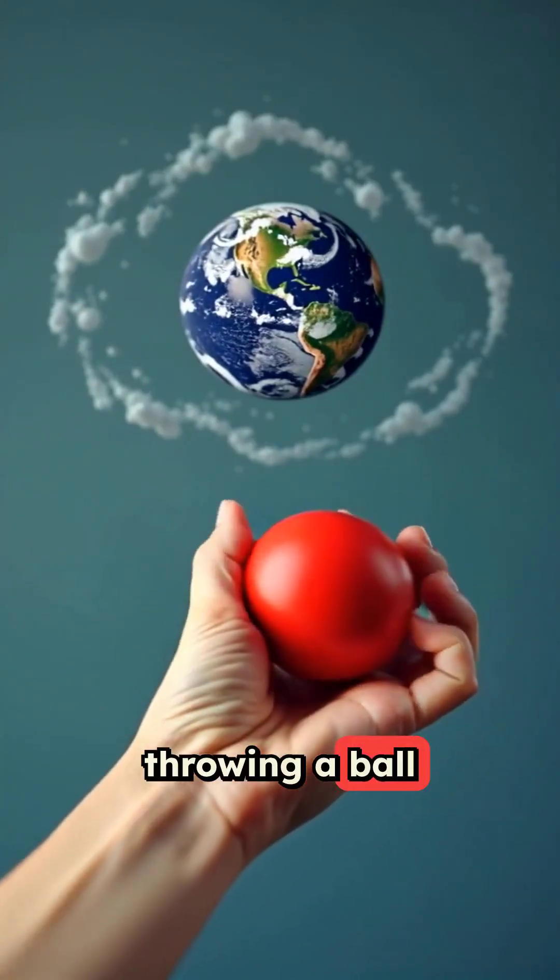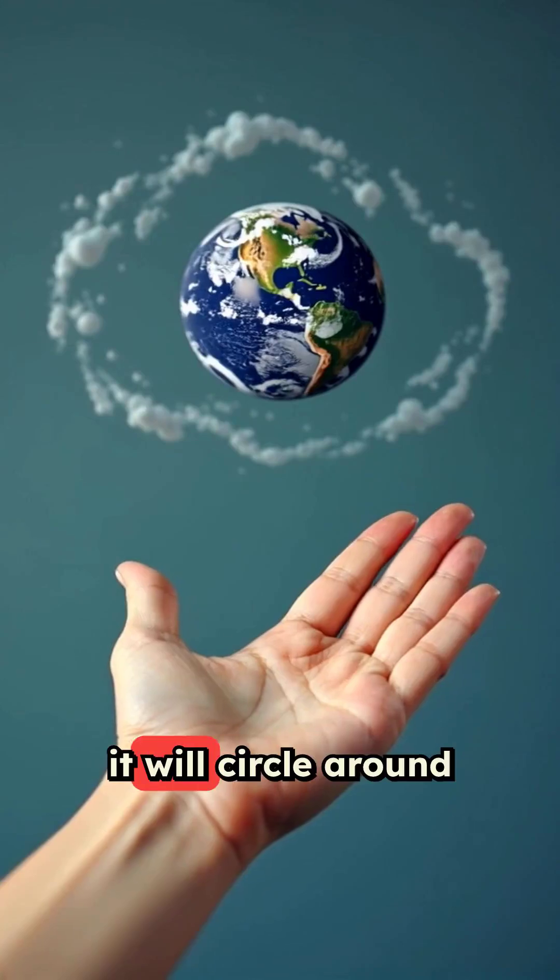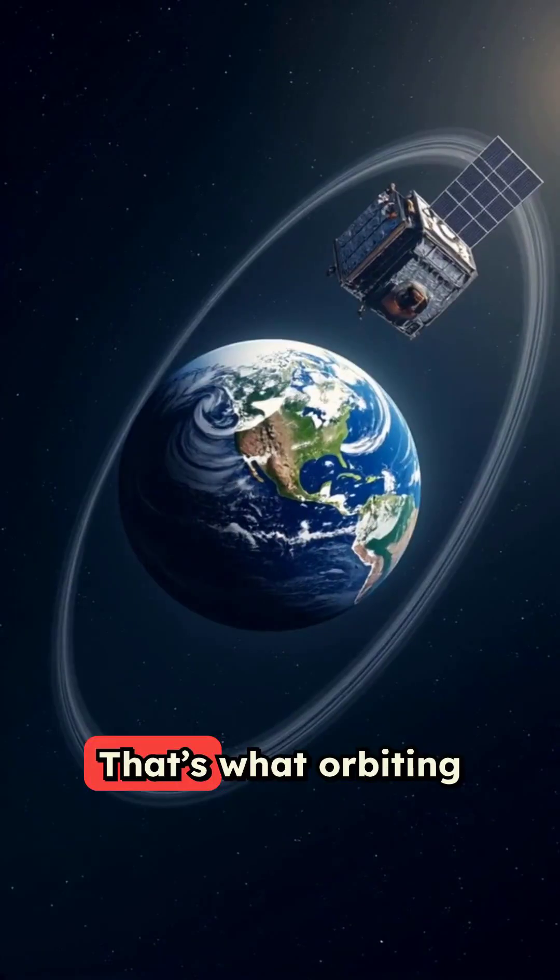Think of it like throwing a ball. If you throw it just right, it will circle around instead of landing. That's what orbiting is.